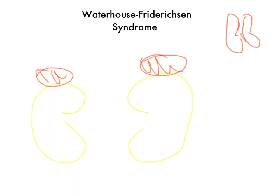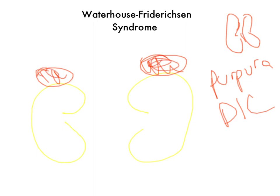You also have purpura or DIC in this syndrome. Essentially, you get bilateral destruction of the adrenal glands due to infection, and it's due to bleeding into them.